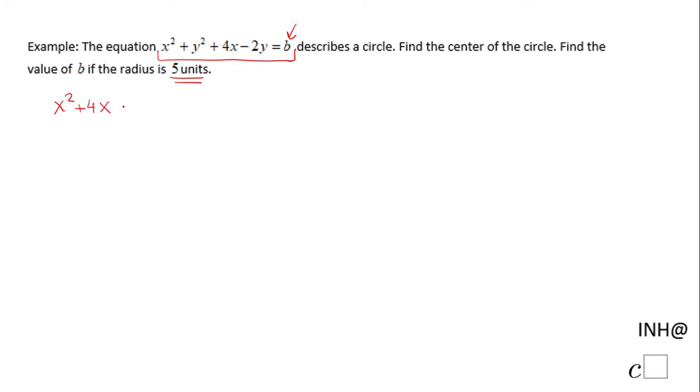So x squared plus 4x plus y squared minus 2y equals B. Then the next step is to complete the square. x squared plus 4x - I'm going to take this 4 and divide it by 2, and then I'm going to square this result. In this case, 2 squared gives us 4. This 4 is the number we need to complete the square for this trinomial.